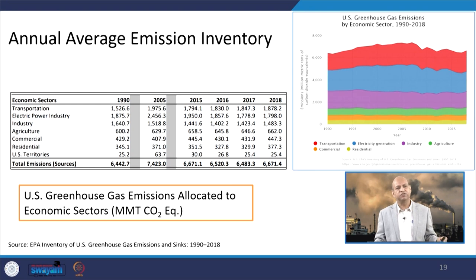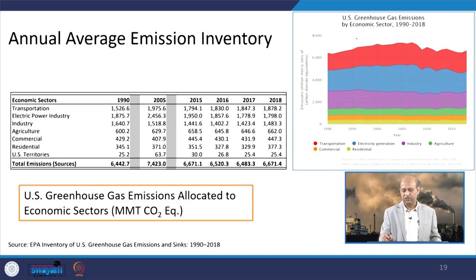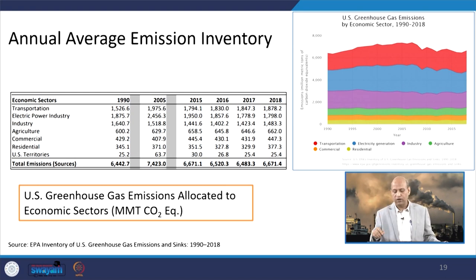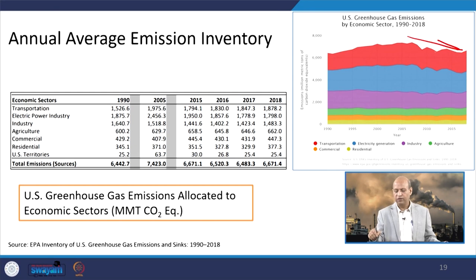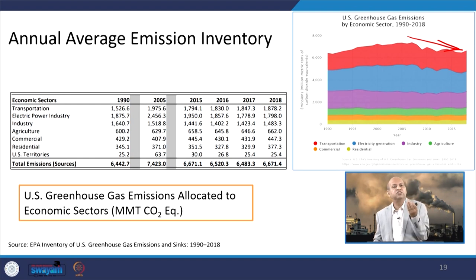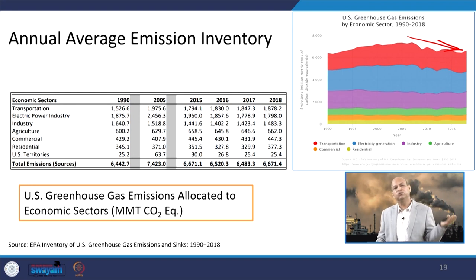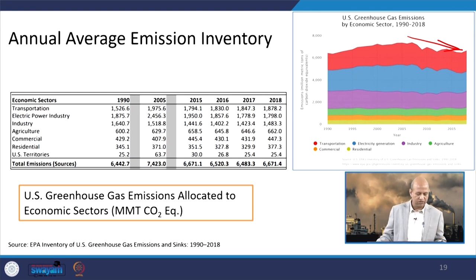For annual average emission inventory, one example is US greenhouse gas emissions by economic sector from 1990 to 2018 — you can see the variation. When you have the yearly emission inventory, you get different values and it also gives a trend. The transportation trend from 2010 to 2015 is reducing. You can investigate the reason — whether fuel efficiency is better in new vehicles, the population is shifting to public transportation, or technology is better.